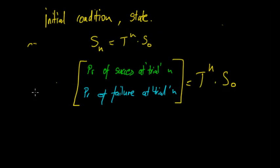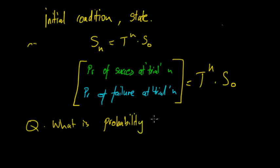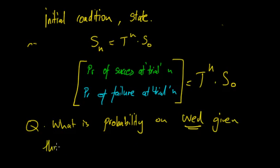So if you have a question asking what is the probability of success and failure on Wednesday, given something on Monday, then S zero refers to the Monday initial condition - depending on the question.